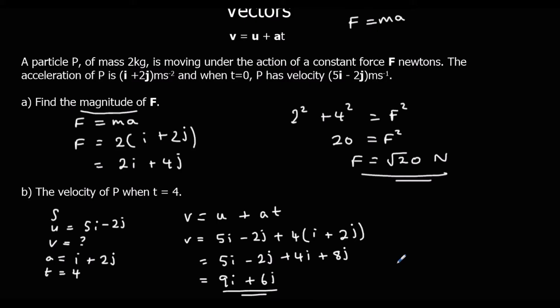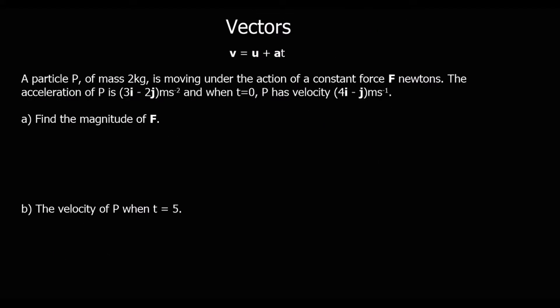And that is the velocity. If we were asked for speed, we would have to convert this by doing Pythagoras, but it's velocity. So the answer is 9i plus 6j, and that's meters per second. Here's another one of the same questions — pause the video, give it a go, and press play when you're ready to go through.